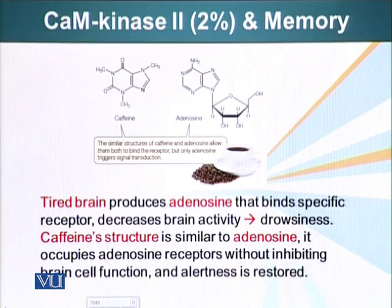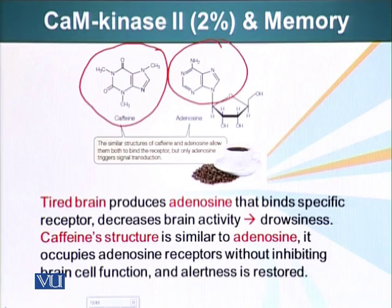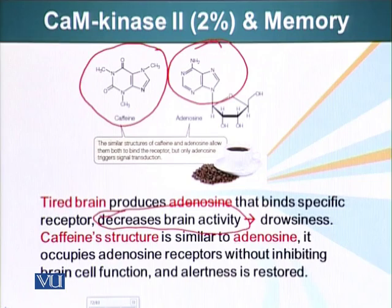Another thing we do to our nervous system — sort of a little bit of abuse perhaps — is we subject it to caffeine. Caffeine has a structure similar to adenosine. Adenosine is produced by neurons when they get tired. Adenosine binds specific receptors on specific cells of the brain, resulting in decreased brain activity, drowsiness, and sleep. When we want to stay alert because we have an exam or assignment due, we drink coffee. That caffeine binds the adenosine receptors on the brain.